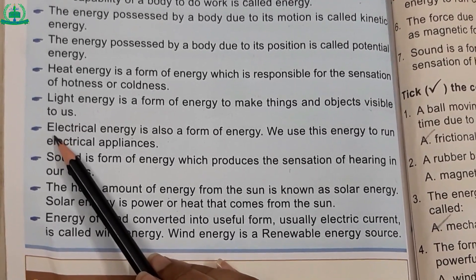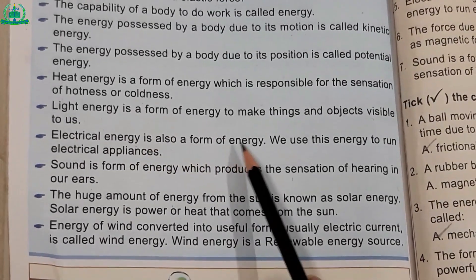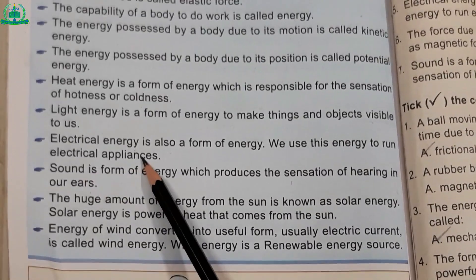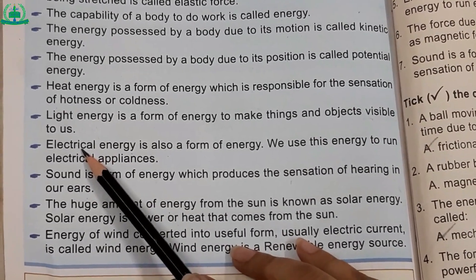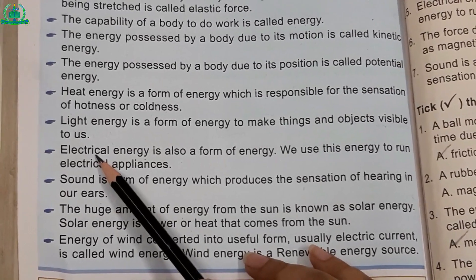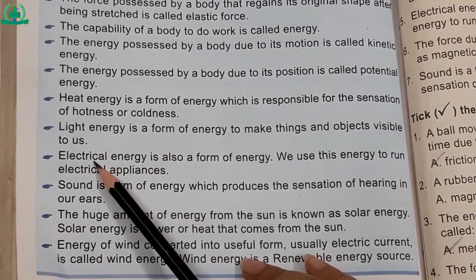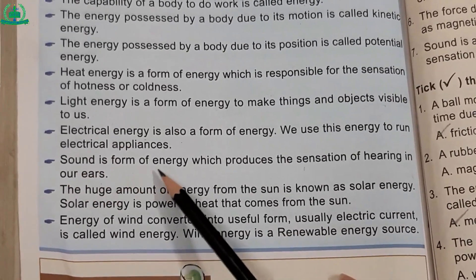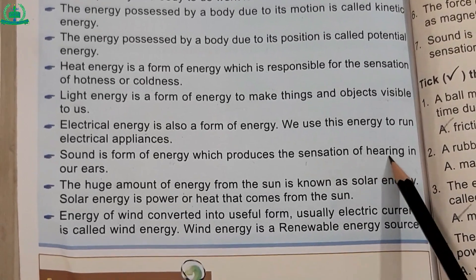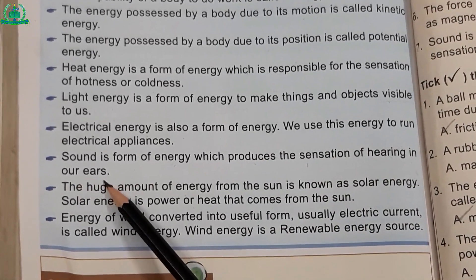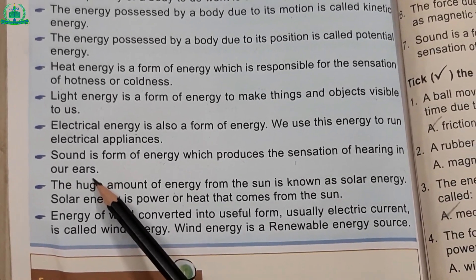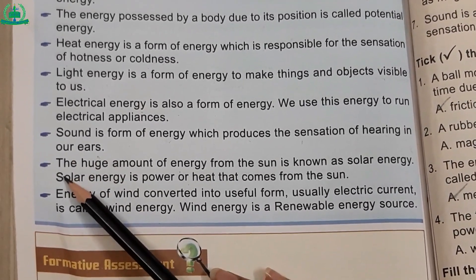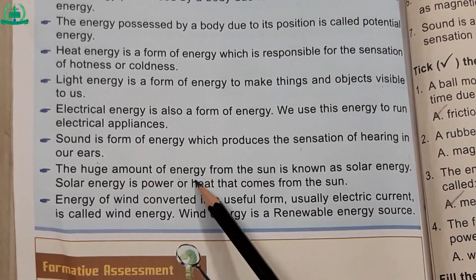Number thirteen — electrical energy is also a form of energy; we use this energy to run electrical appliances. (Electrical energy, energy ki ek form hai; hum is energy ko bijli ke aalat chalane ke liye istamal karte hain.) Number fourteen — sound is a form of energy which produces the sensation of hearing in our ears.